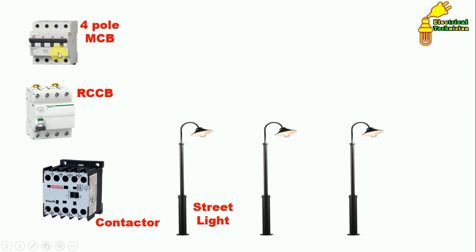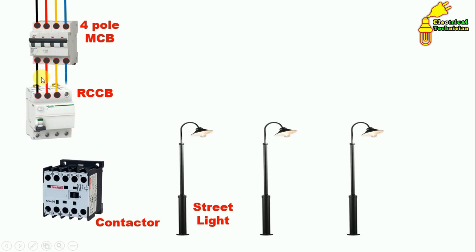For power wiring, first connect power supply to the MCB — neutral supply and three-phase supply. Then to the RCCB also connect neutral supply and three-phase supply. In the contactor, there are three terminals L1, L2, L3, and on these three terminals we connect power supply.